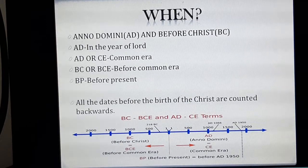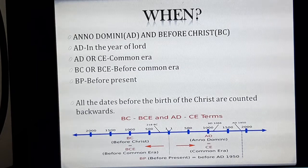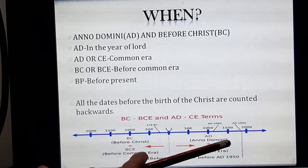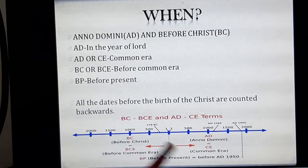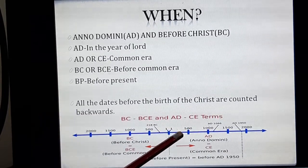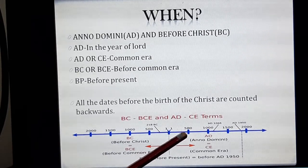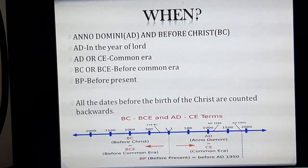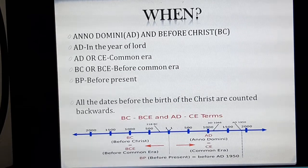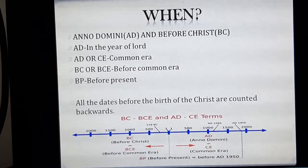The years after the birth of Jesus Christ are expressed in AD, which means Anno Domini, that is 'in the year of the Lord'. These years are counted forwards. For example, 499 AD will come before 500 AD.